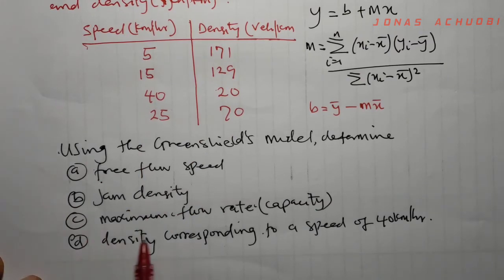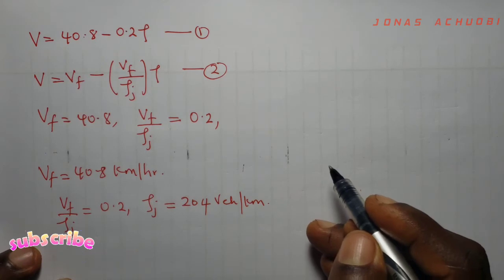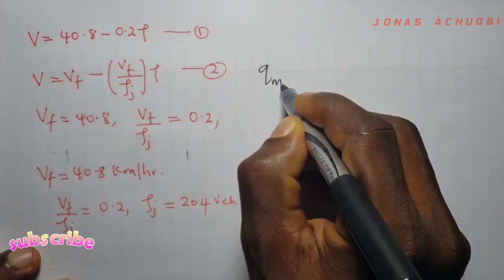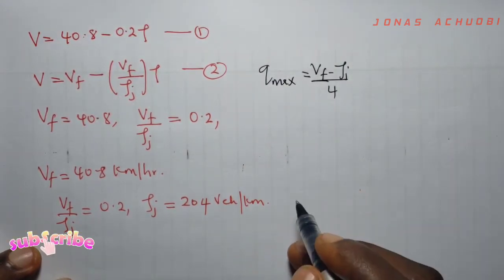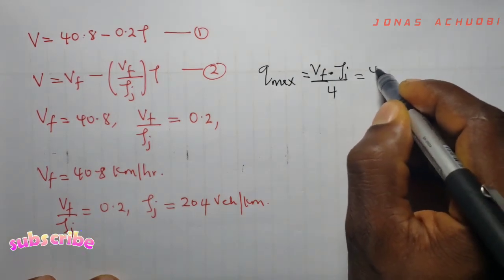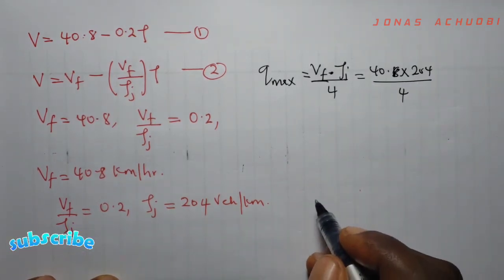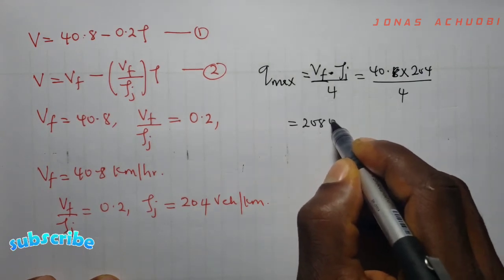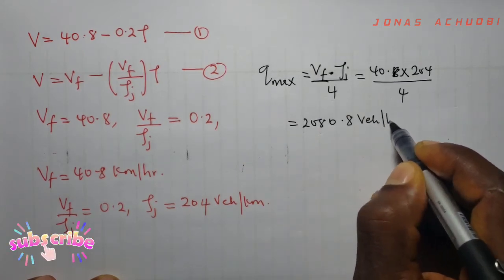The next question says we determine the maximum flow speed. In a previous video, we had established a relationship between the maximum flow rate, jam density, and speed. We said that Qmax maximum flow rate is equal to Vf times jam density over 4. So the free flow speed which is 40.8 times the jam density which is 204 divided by 4 gives us 208.8, so the maximum flow rate becomes 208.8 vehicles per hour.